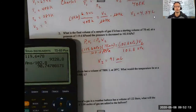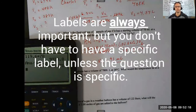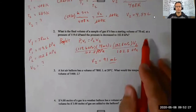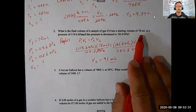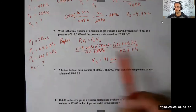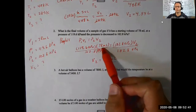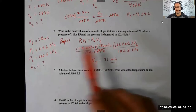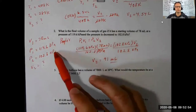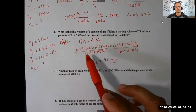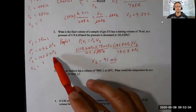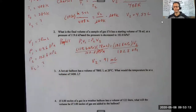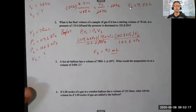For Boyle's, Charles's, Avogadro's, and Gay-Lussac's laws, the units on your answer aren't critical unless the question specifically asks for a particular unit — just keep whatever units the problem gives you. However, you do need to make sure the units for each variable match on both sides. For example, if one pressure is in atmospheres and the other in kilopascals, you need to convert so they're the same before calculating.